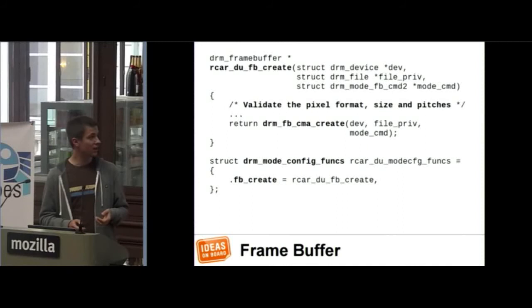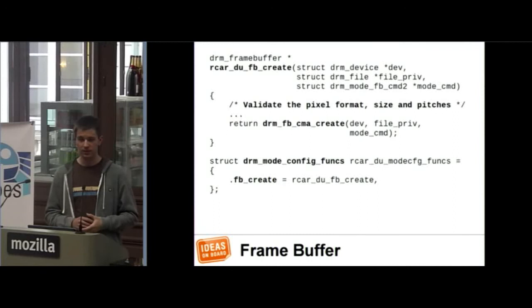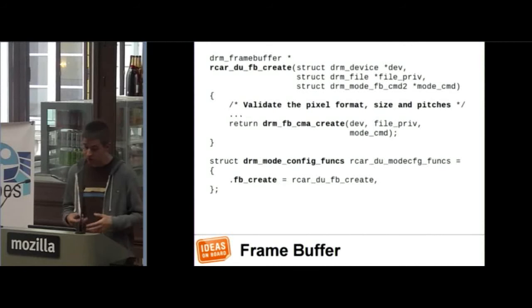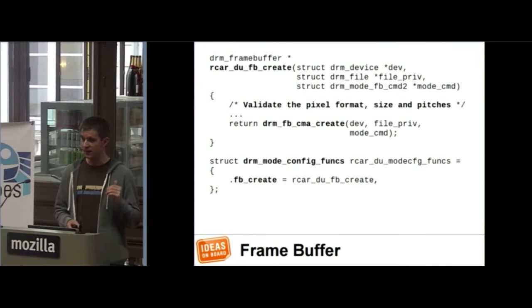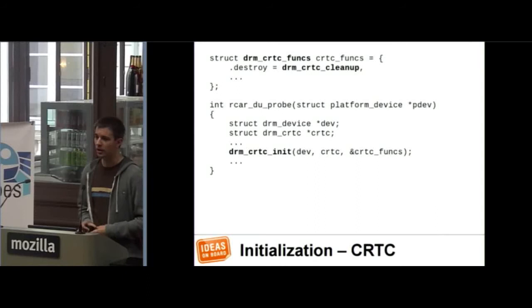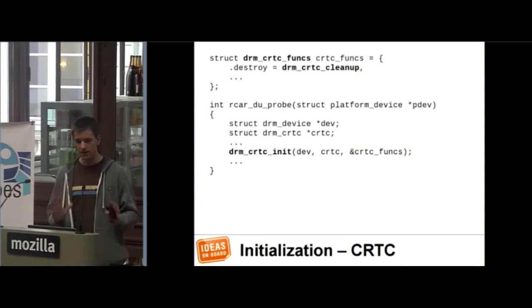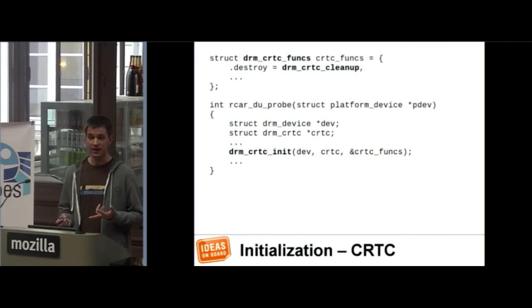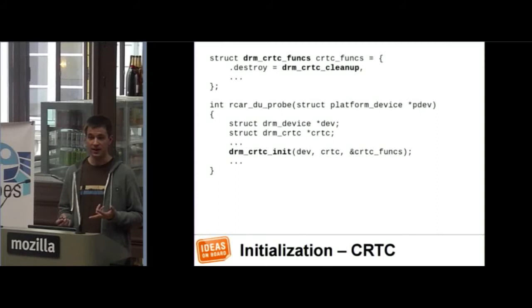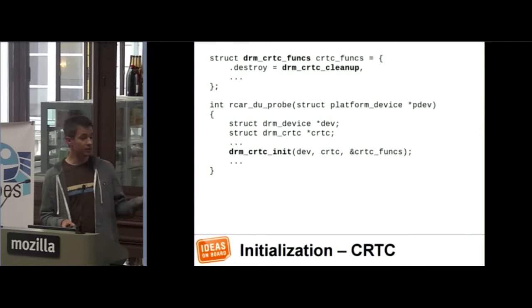Coming to the frame buffer, I mentioned the FB create function. The reason you want to override that is to validate the parameters you get from user space — validate the pixel format to make sure you can support it, validate the size, and if you can't support it, return an error. Otherwise, use the helper function to create the buffer. Now we come to the CRTC, encoder, and connector — objects that correspond to hardware pieces that need to be configured. When you initialize your driver in the probe function, you need to create at least one CRTC, at least one encoder, and at least one connector.